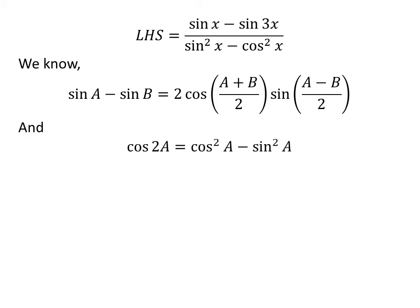We also know the famous trigonometry identity: cosine of 2 times A is equal to square of cosine of A minus square of sine of A. The proof of this trigonometry identity is given in the video appearing in the upper right corner, and the link is also given in the description section.